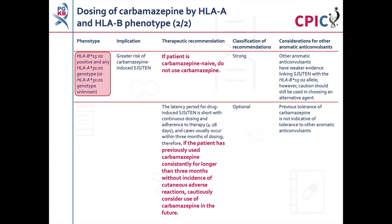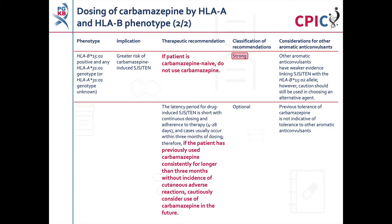Patients who carry the HLA-B*1502 allele, regardless of their HLA-A*3101 genotype, are at an increased risk of developing carbamazepine-induced Stevens-Johnson syndrome/toxic epidermal necrolysis. Carbamazepine should not be used in these patients if they are carbamazepine naive. This is a strong recommendation. Other aromatic anticonvulsants have weaker evidence linking the HLA-B*1502 allele and SJS-TEN; however, caution should still be exercised when selecting an alternative agent.